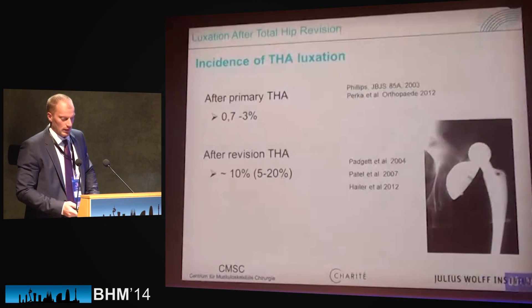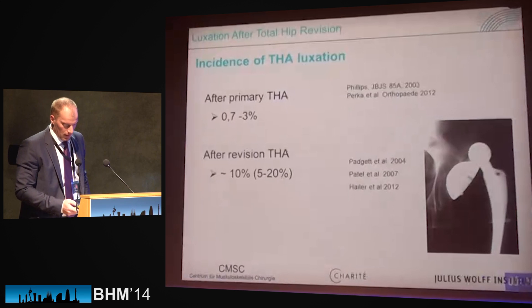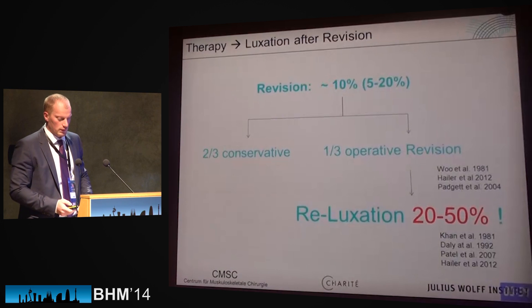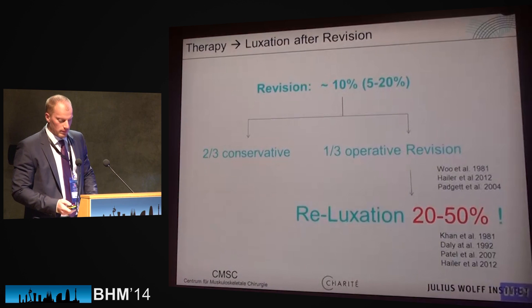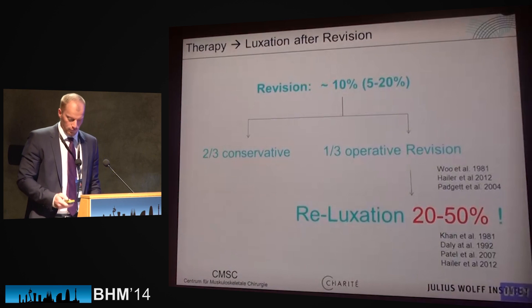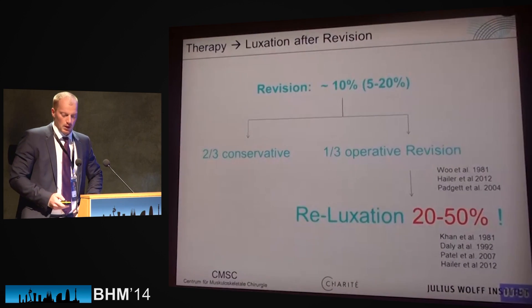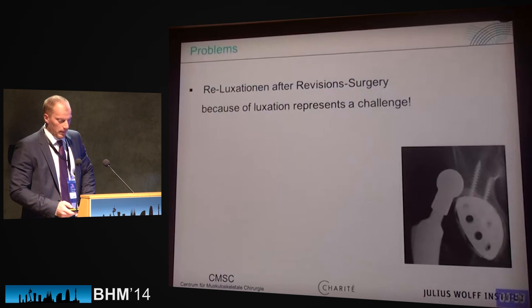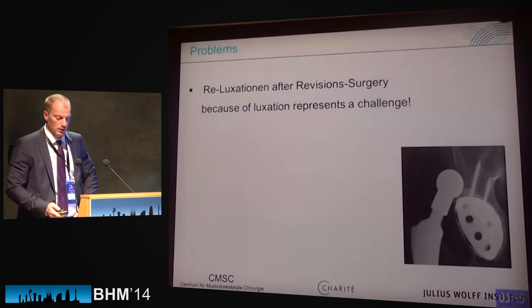Dear ladies and gentlemen, the incidence of luxation or dislocation after revision is much higher than after primary. This is well known — it's up to 20%. Looking at therapy options from the literature, 60% is treated conservatively and 30% needs an operative revision. From these revisions, we have a re-luxation rate which is quite high, from 20% to 50%. That means re-luxation after revision surgery because of luxation represents a challenge.